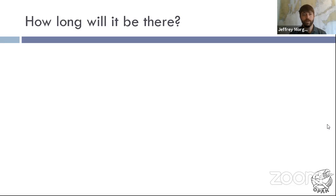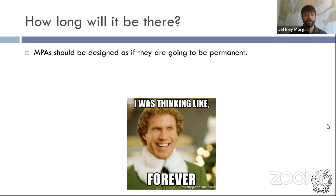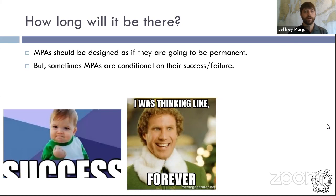How long will it be there? From our definition, we're talking about something that should be permanent. It's really hard to think about setting something up that might fail, but that is something we should think about. Oftentimes marine protected areas are conditional on their success or failure. We'll say we're going to put aside this parcel of ocean, put these regulations on it, and come back in five years, ten years, fifteen years, and twenty years to see if what we did is working — and if not, what can we do to tweak it?